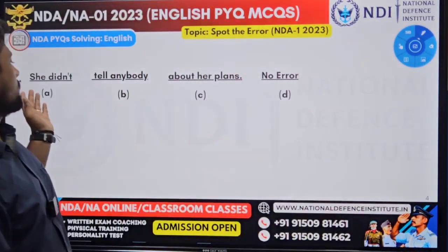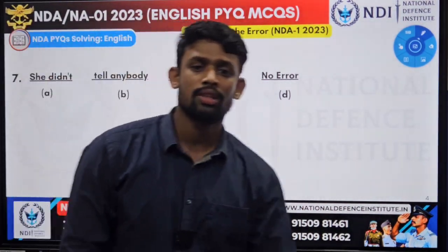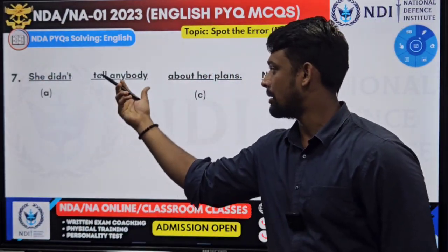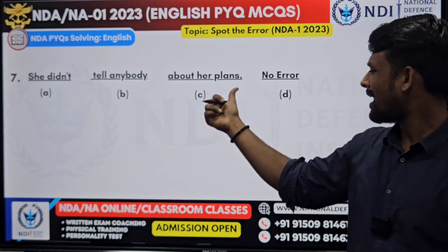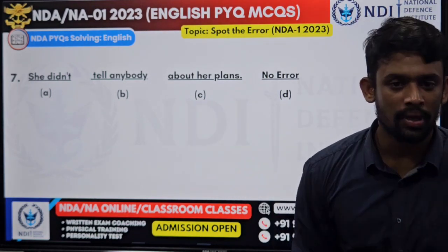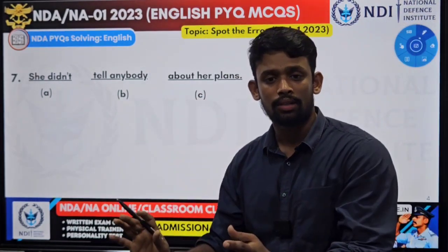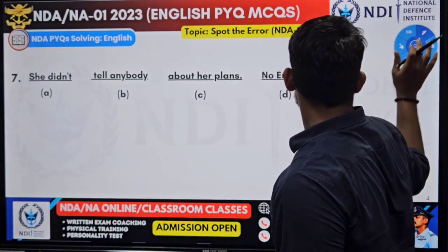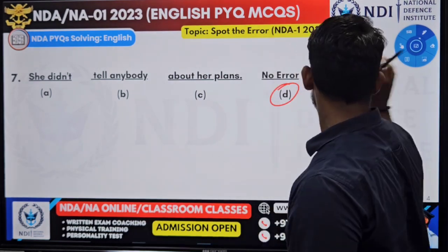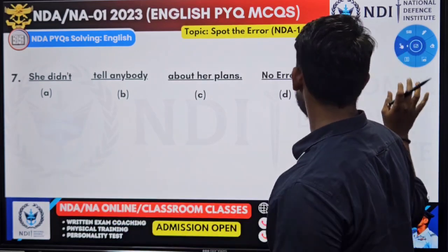Question seven: 'She didn't tell anybody about her plans.' When you say 'she didn't tell anybody about her plans' — 'plan' or 'plans', which is correct? Either of them are correct. So there is no error in this question. Both 'plan' and 'plans' are correct — she can have many plans, multiple plans. No error is the correct answer.